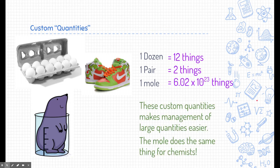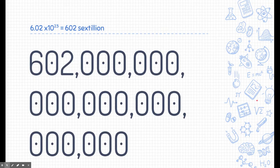These custom quantities make management of a large amount easier. Imagine being on a chicken farm and having to sell individual eggs instead of dozens — they package them to make them easier to deal with, and the mole does the same thing for a chemist. This number, 6.02 times 10 to the 23rd, written out in long notation, we would call 602 sextillion.